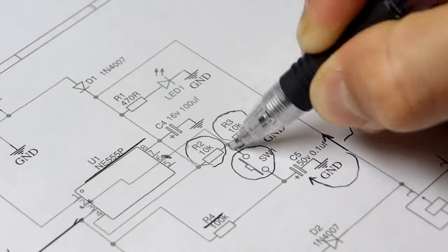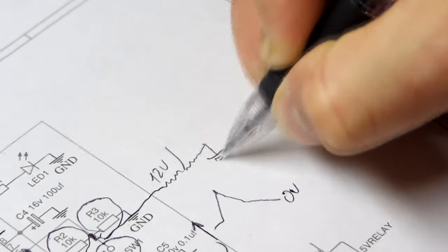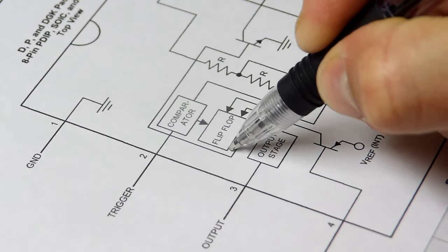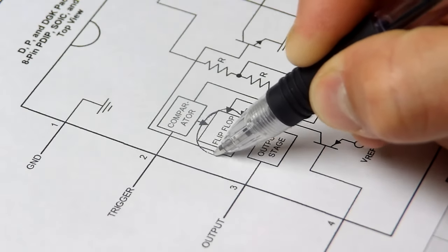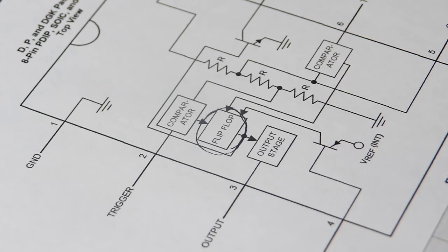The voltage divider formed by the resistors R2-R3 will provide a voltage of 2/3 of our supply to pin 6 and 2. And when the switch is pressed, this voltage is interrupted and triggers the internal flip flop. This will allow the output to be switched between two stages.